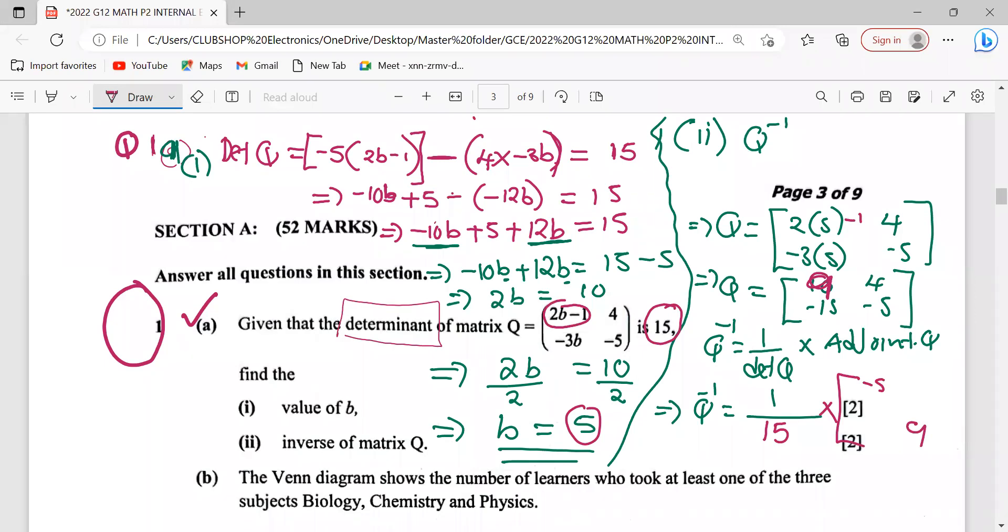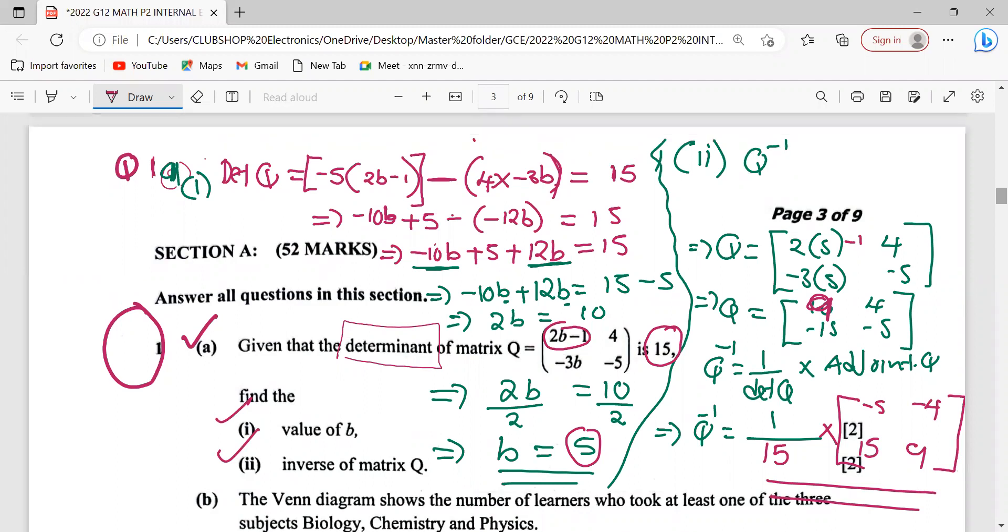We'll have 9 here. Then with the minor diagonal, we multiply by negative, meaning that here there will be 15 and then there will be negative 4. Basically, this is your answer. You get your 4 marks.